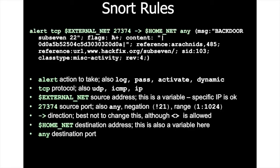The port number 27374 is the source port. A negation like 'not 21' means a port range of 1 to 1024. Then we have a direction operator indicating traffic flow. 'home_net' is the destination address — also a variable — and 'any' is the destination port. This is how rules are constructed using the syntax.